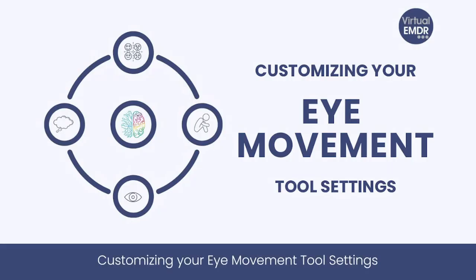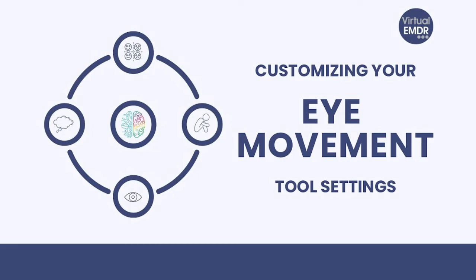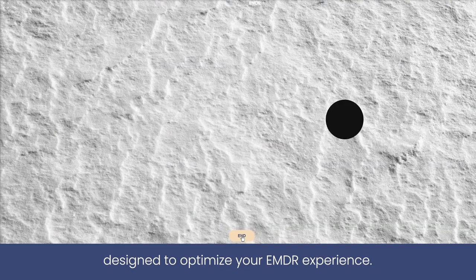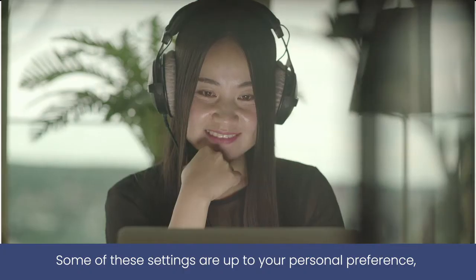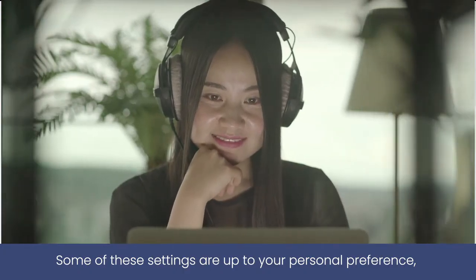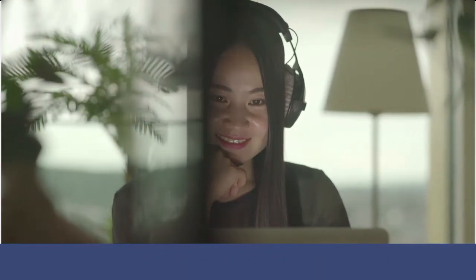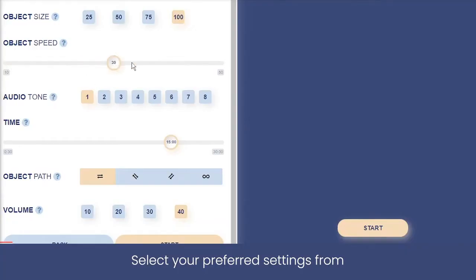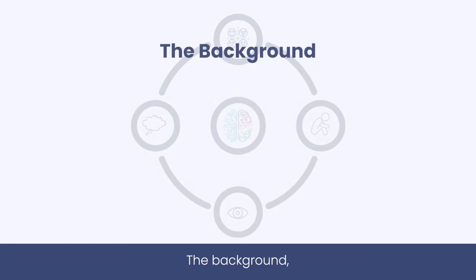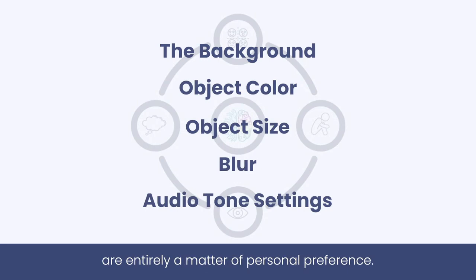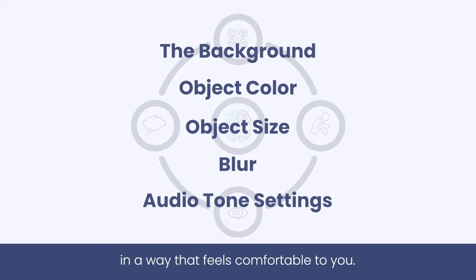Customizing your iMovement Tool Settings. The Virtual EMDR iMovement Tool features customizable settings designed to optimize your EMDR experience. Some of these settings are up to your personal preference, while others can help to intensify or enhance your EMDR session results. Select your preferred settings from the Virtual EMDR iMovement Tool menu. The background, object color, object size, blur, and audio tone settings are entirely a matter of personal preference. Set up the iMovement Tool in a way that feels comfortable to you.